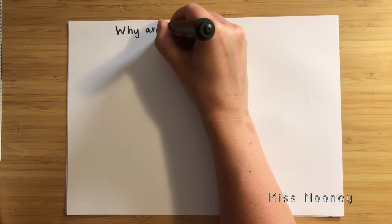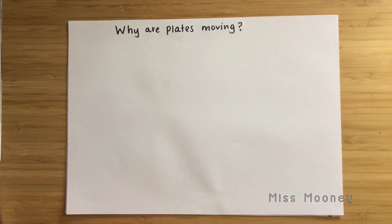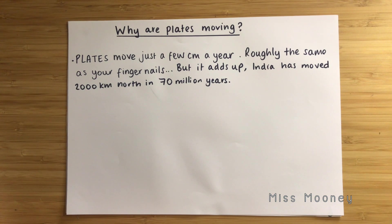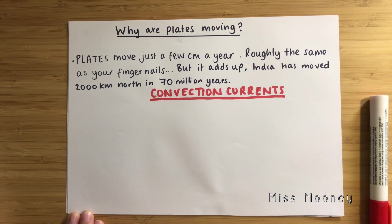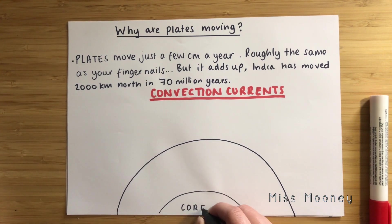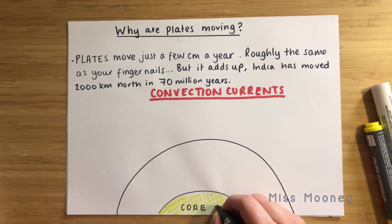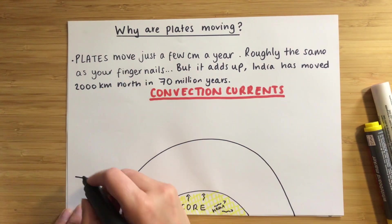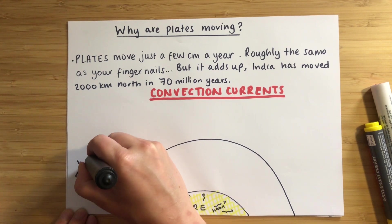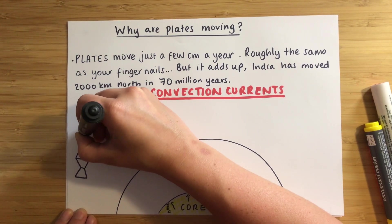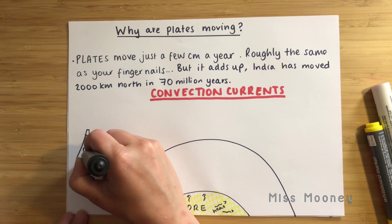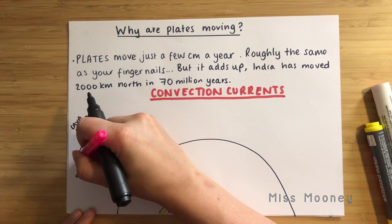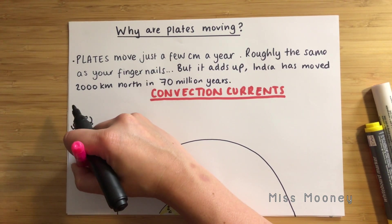The tectonic plates are moving extremely slowly and the key process that causes this is called convection currents. A simple way of imagining convection currents is to compare it to a lava lamp. The bulb at the bottom is extremely hot and the heat radiates into the liquid, causing it to be less dense. This makes the bubbles rise up, and then once they're further from the heat the liquid cools, becomes denser, and sinks — creating that cycle of bubbles rising and falling.